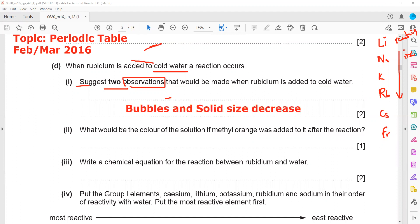The next is, what would be the color of the solution if methyl orange was added after the reaction? Methyl orange is an indicator, and when rubidium is added to water, it will turn into rubidium hydroxide, which is an alkaline solution. So what is the color of methyl orange in alkaline conditions? It is yellow in color.